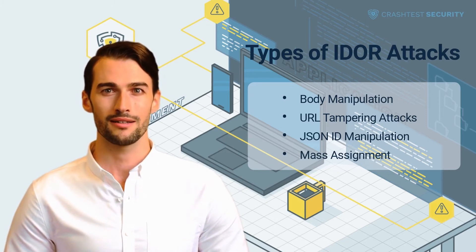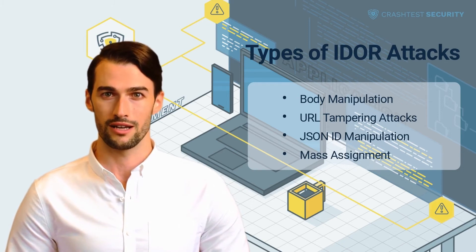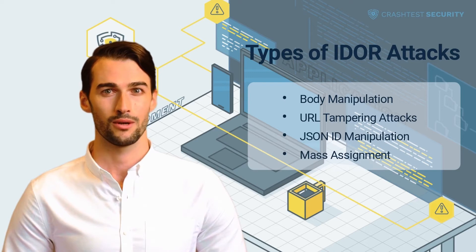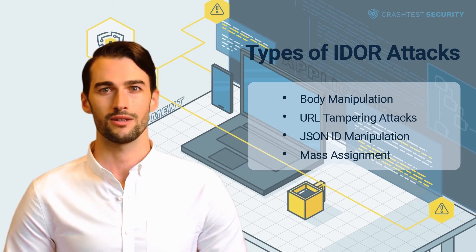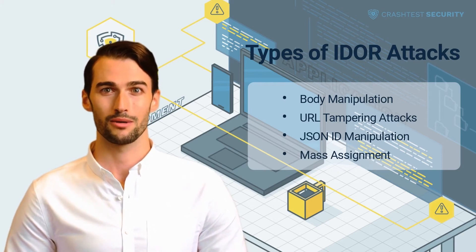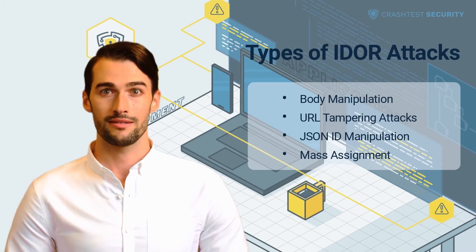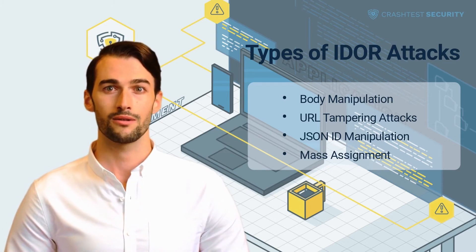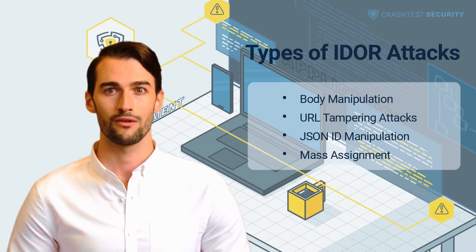JSON ID manipulation: JSON is a popular framework for data exchange between different host machines, mainly sending data between a web server and web applications. An attacker may intercept JSON data sent between APIs, servers, and the web application to gain unauthorized access to application configuration and data. Mass assignment: attackers manipulate a record pattern to modify large datasets they are not authorized to access.